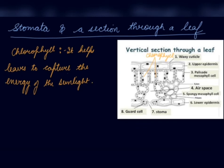This is the vertical section of the leaf showing how the leaf looks from inside. These are the wax cuticles, upper epidermis, palisade cells, then here is the air space through which the air can come and go. Here are the spongy cells, lower epidermis, then stomata and guard cells. This is how the leaf looks.